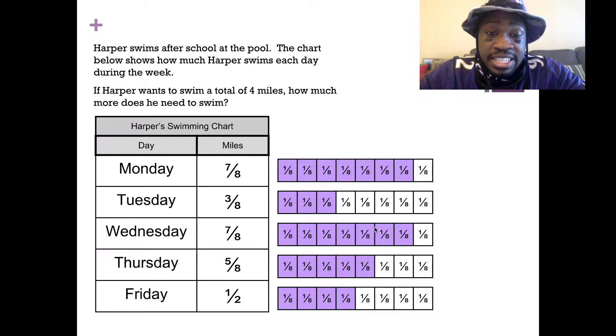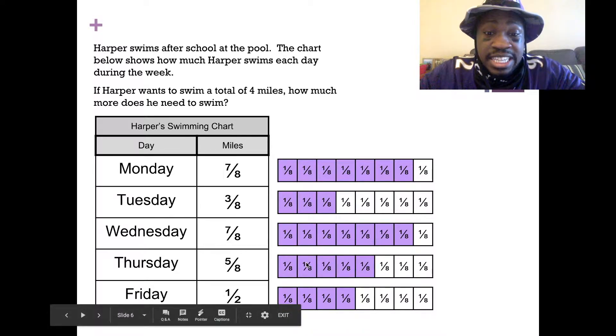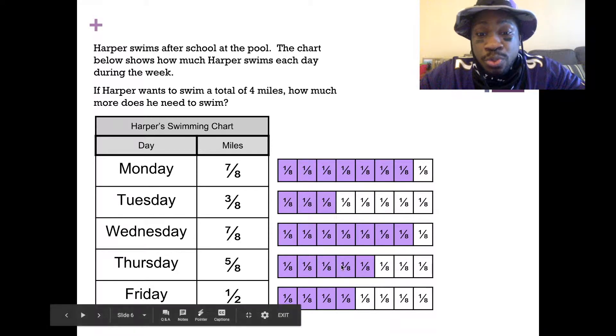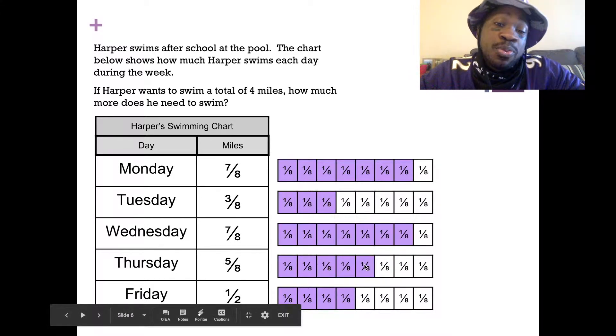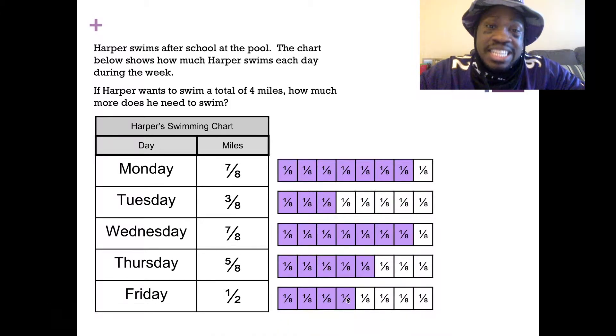Let's keep going. So seventeen-eighths, eighteen-eighths, nineteen-eighths, twenty-eighths, twenty-one-eighths, twenty-two-eighths. I have twenty-two of the eighths. Still need Friday. So twenty-two-eighths, twenty-three-eighths, twenty-four-eighths, twenty-five-eighths, twenty-six-eighths. Harper swam twenty-six-eighths miles. Twenty-six-eighths miles in the pool. That's how much he swam.